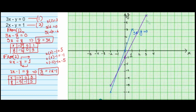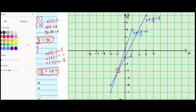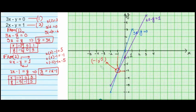Label this second line: 2x minus y equals 1. Now you can see that these two straight lines intersect at a point. The x-coordinate of the intersection is negative 1, and the y-coordinate is negative 3. So the solution of these linear equations is (−1, −3), which is the point of intersection. This means the value of x is negative 1 and the value of y is negative 3. That's how we use the graphical method to solve simultaneous linear equations.